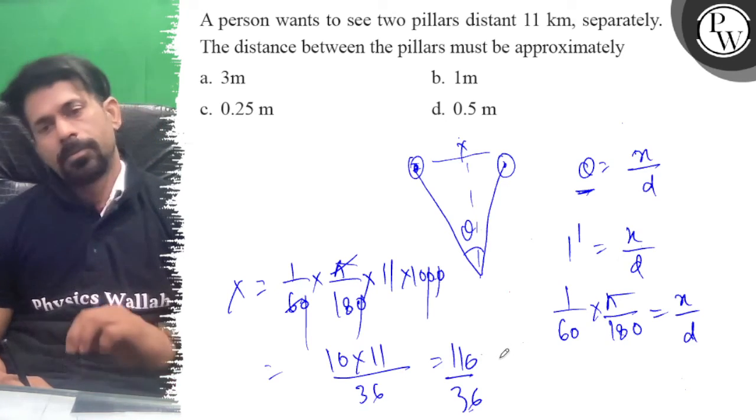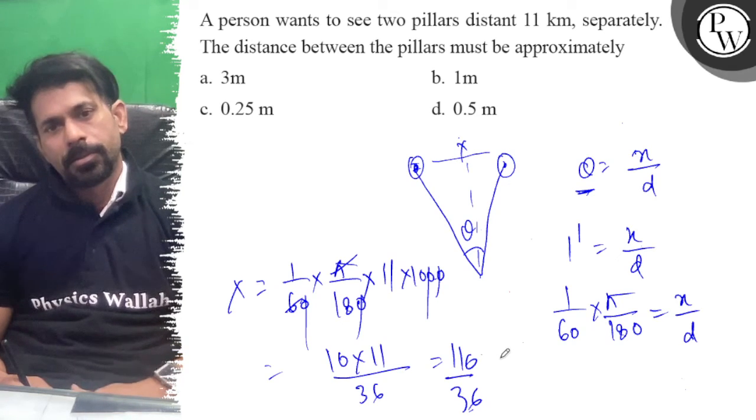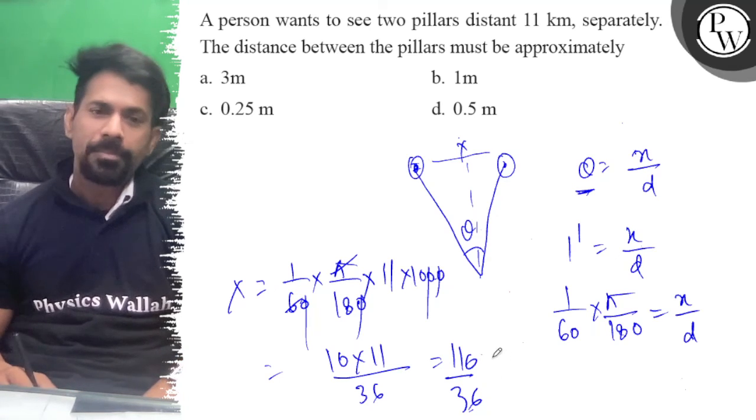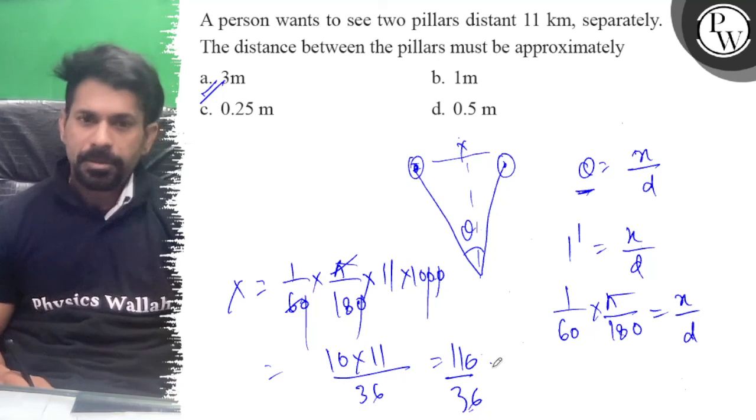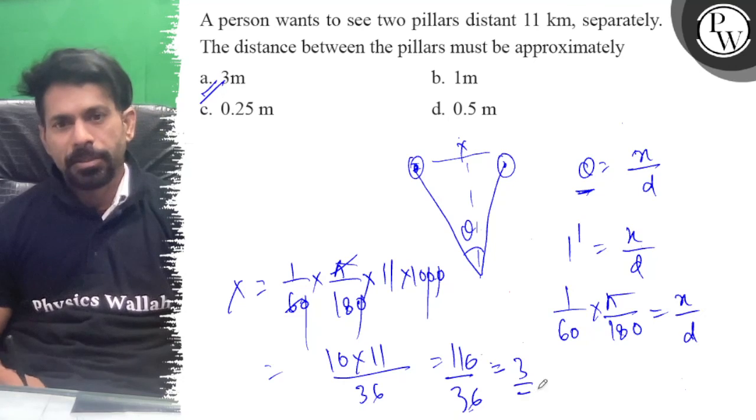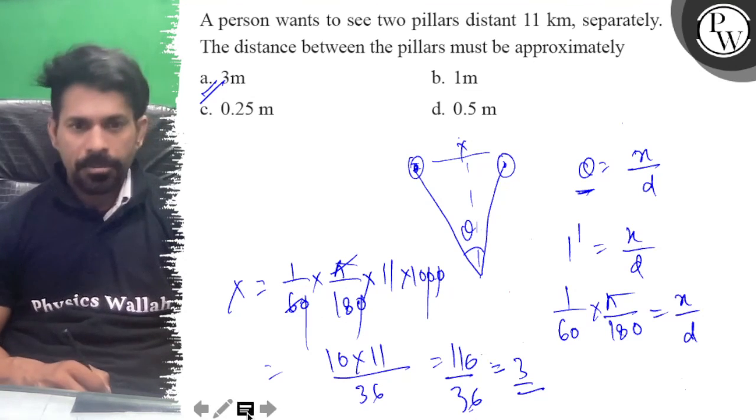If we solve this, 36 goes into 110 approximately 3 times. So approximately 3. 108 roughly, so approximately 3. So the right answer of the question is A. All the best.